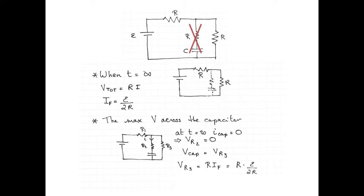Using Ohm's law for the potential difference across R3, the resistance multiplied by the final current is R multiplied by E over 2R, which makes the potential difference across resistor three and the potential difference across the capacitor to be E over 2 at t is equal to infinity.